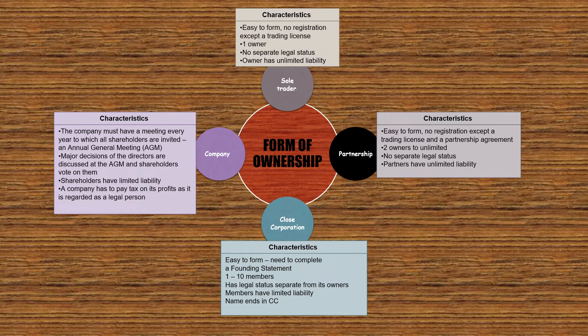At the AGM, major decisions of the directors are discussed and shareholders vote on them. Shareholders have limited liability. A company has to pay tax on its profits as it is regarded as a legal person. Limited liability means that if the company owes someone money, they cannot come after the owner's personal assets.